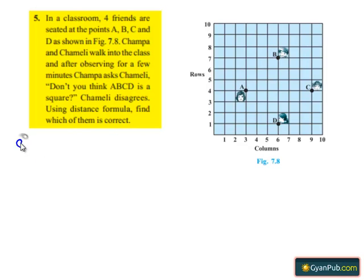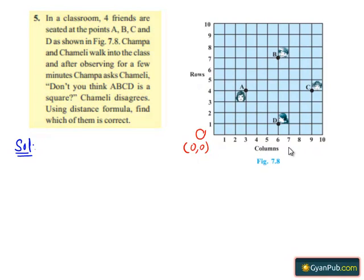Moving on to the solution, let us suppose that the bottom left corner of the classroom is the origin, represented by O, having the coordinates (0, 0). Let the horizontal line of columns be the x-axis and the vertical line of rows be the y-axis. We need to find the coordinates of the points A, B, C and D.